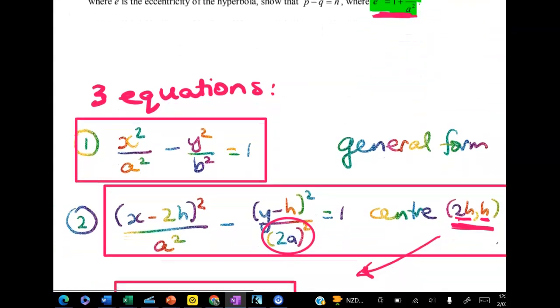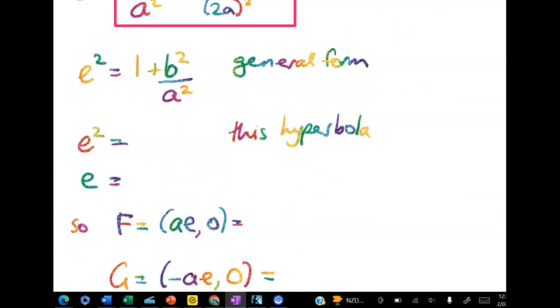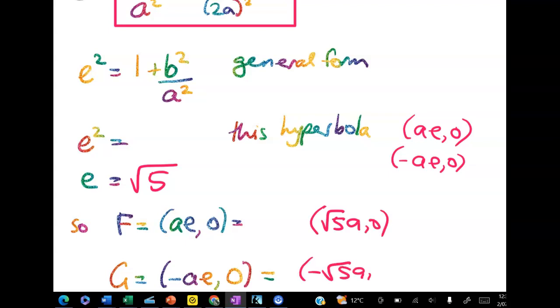We know that those foci are at ae and 0 and negative ae and 0, but for our equation, for our hyperbola, we had e squared is equal to 5 and e was equal to root 5. So that means that f will be equal to root 5a, 0 and g will be equal to negative root 5a and 0.